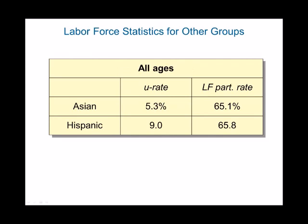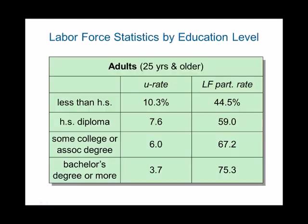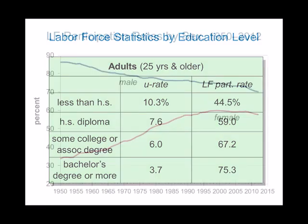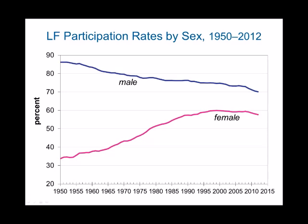Looking at other ethnic groups, Asians have an unemployment rate of 5.3%, while Hispanics have 9%. By education, people with less than a high school degree have a high unemployment rate, while those with a bachelor's degree or more have a very low rate — and labor force participation increases with education. Over time, women's participation rose from the 1960s through about 1995, then stabilized and has been falling. Men's labor force participation has also been falling over time.